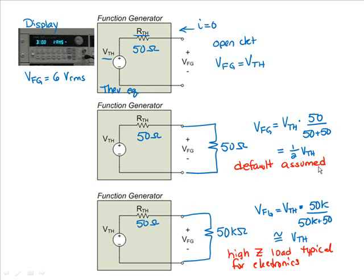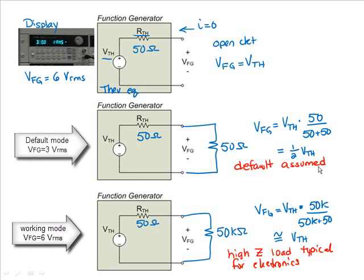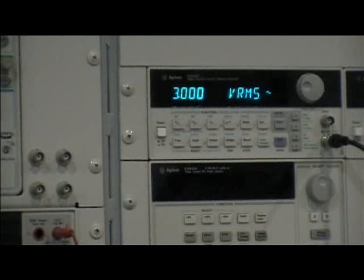But since the display assumes that this value will be half, the function generator will display 3V RMS. To avoid confusion, we can set the function generator from its default mode to the high Z mode using the menu functions.